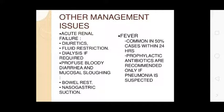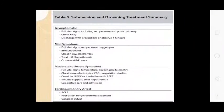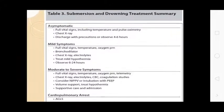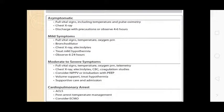Other management issues: Acute renal failure — diuretics, fluid restriction, dialysis if required. Profuse bloody diarrhea and mucosal sloughing — bowel rest, nasogastric suction. Fever is common in 50% of cases within 24 hours; prophylactic antibiotics are recommended only if pneumonia is suspected. Treatment summary covers asymptomatic, mild, moderate, severe, and cardiopulmonary arrest categories.